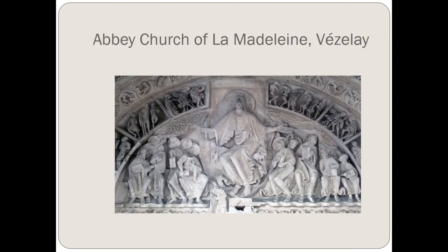Here is some of the external decoration or carvings on the outside of a Romanesque church. This type of exterior sculpture was common. There wasn't much interior light in a Romanesque building, so the artists decorated the outside. They used the tympanum — that semicircular space right above the portal where you would enter — as a common place to decorate.